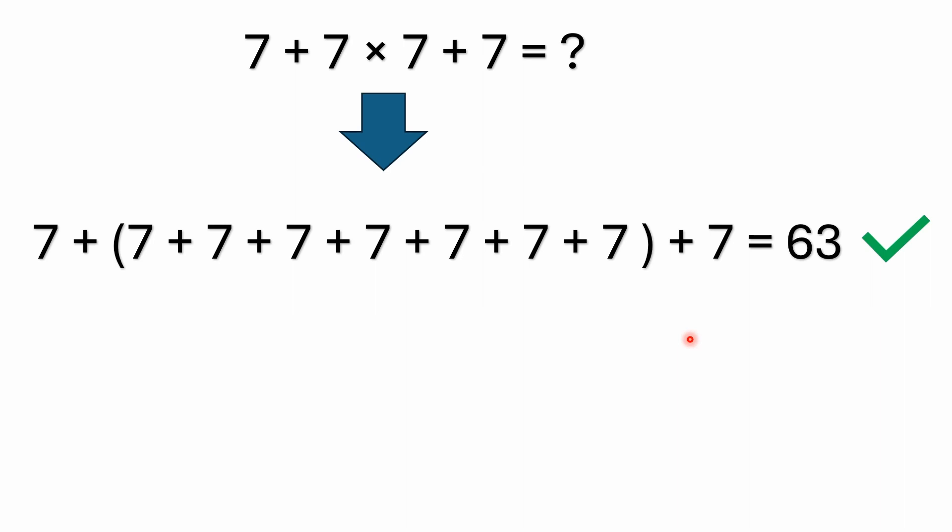And then in BODMAS you have the O which is orders. I kind of like that description better because it's a more general description that describes exponents, square roots, factorials. All those things are nothing more than shorthand for repeated multiplication. PEMDAS, the E is exponents, but even though it just says exponents it really does cover factorials and square roots as well, which again are just shorthand for repeated multiplication.